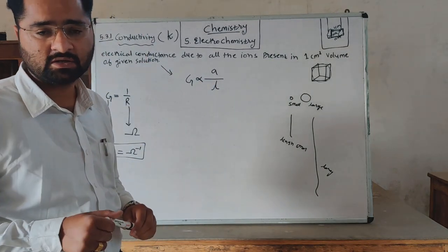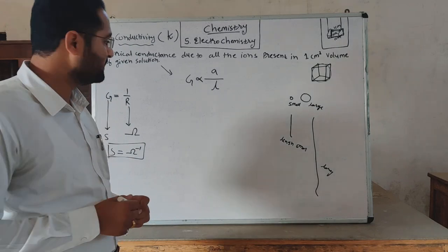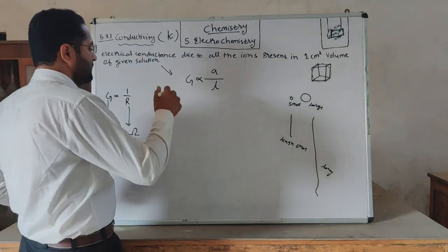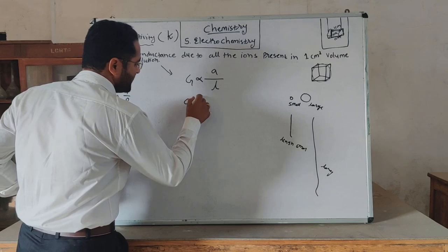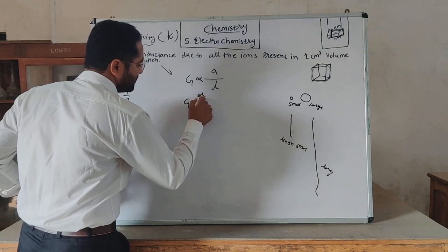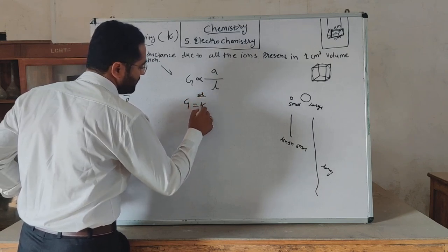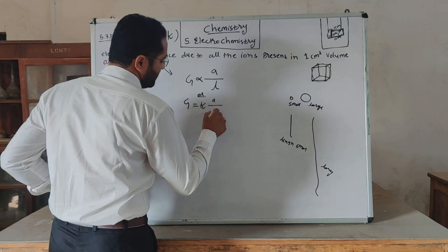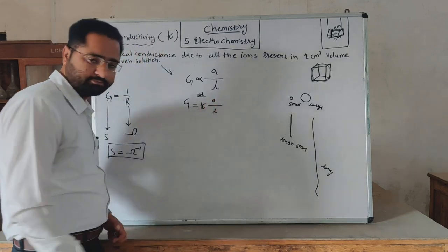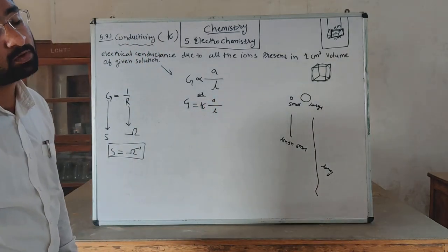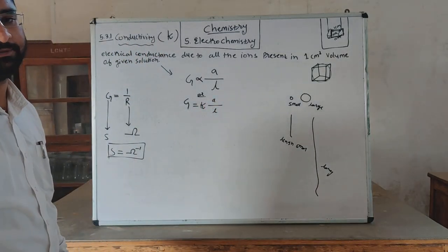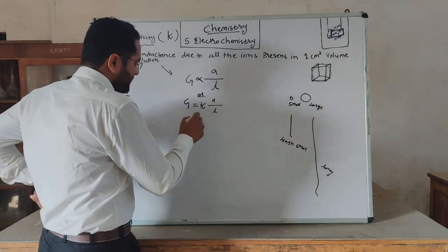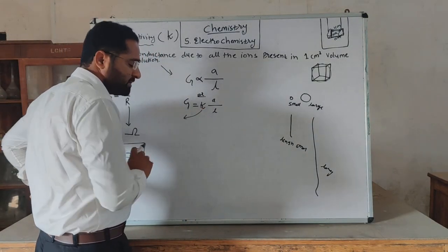A is the area of cross section and L is the length. The formula is G equals K (kappa) times A divided by L. K is the proportionality constant.